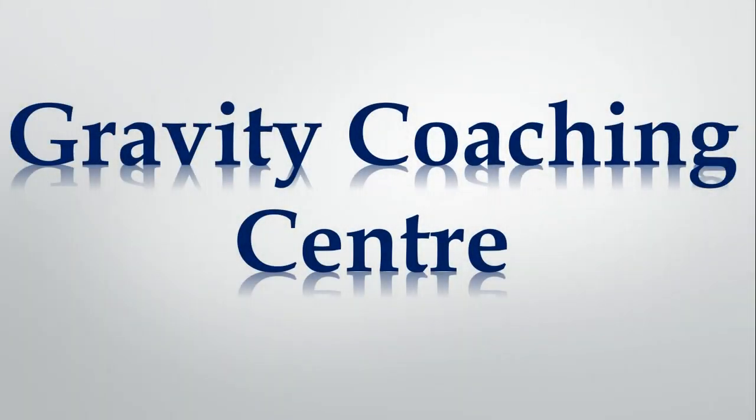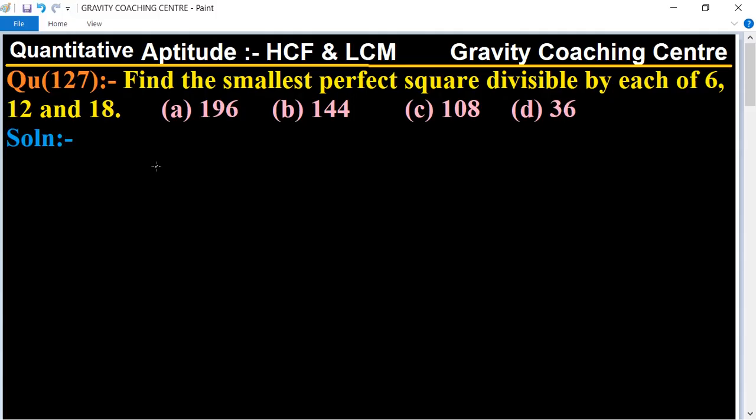Welcome to our channel Gravity Coaching Center. Quantitative Aptitude chapter HCF and LCM. Question number 127: Find the smallest perfect square divisible by each of 6, 12, and 18. So first of all we will find the LCM of 6, 12, and 18.